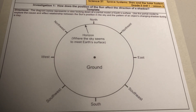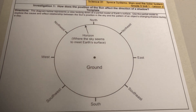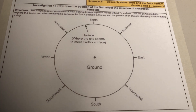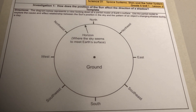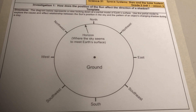The diagram is a partial model of Earth's surface looking down from above. The circle, as you see here, represents the horizon, and the area inside the circle represents the ground. The horizon is where the sky seems to meet Earth's surface. You usually can't see the horizon because buildings, trees, and other objects get in the way.